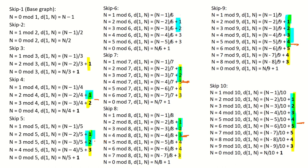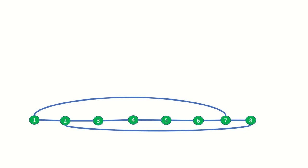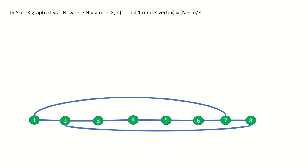In the beginning, for 1 mod x or 2 mod x, it is quicker to take the step right path to reach our final vertex from the final 1 mod x vertex. Yet at a certain point it becomes quicker to use the step left and then skip right method. But where exactly does this switch occur? Well we can write an expression to determine the distance using the two methods of step right or step left and skip forward. For both methods we need to remember that in a skip x graph of size n where n is a mod x, the distance between our first vertex and the final 1 mod x vertex is n minus a over x. We can call this value c.